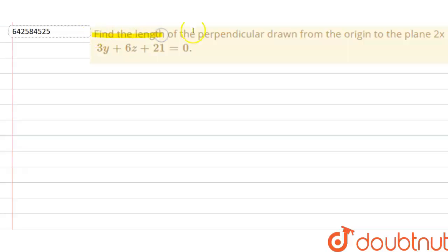Hello everyone, so our question is: find the length of the perpendicular drawn from the origin to the plane 2x plus 3y plus 6z plus 21 is equal to 0.